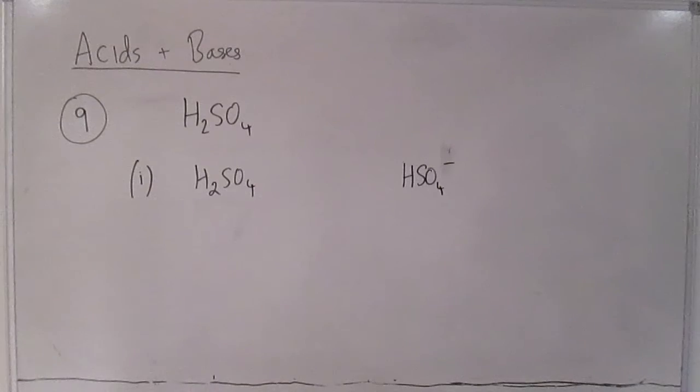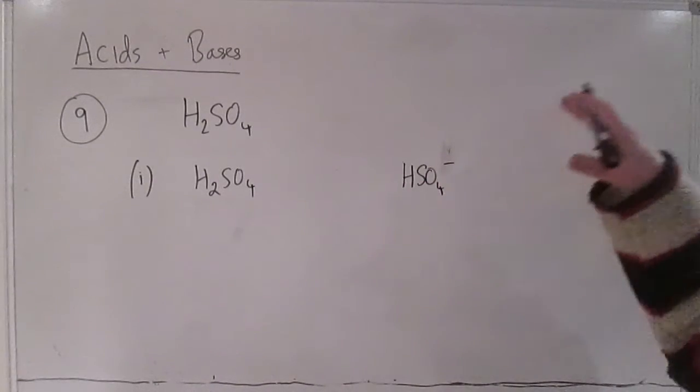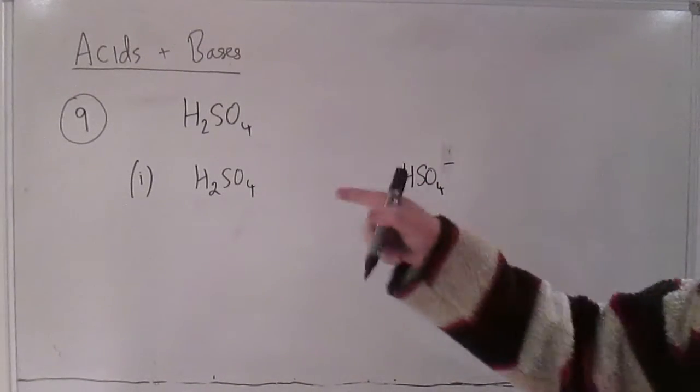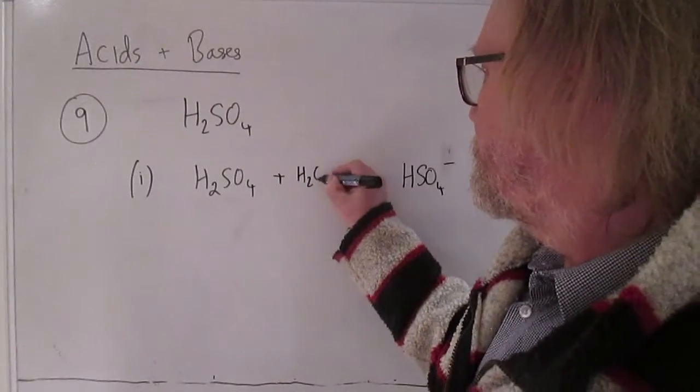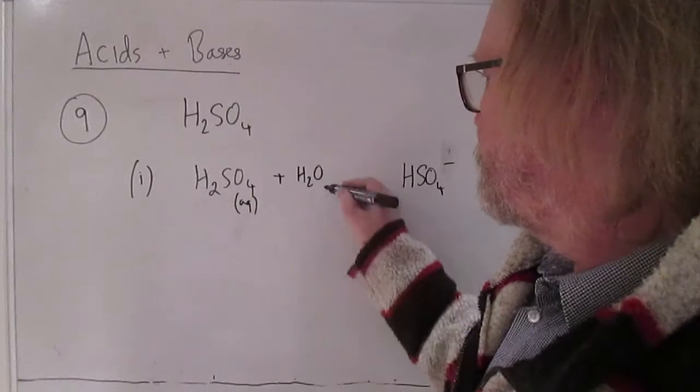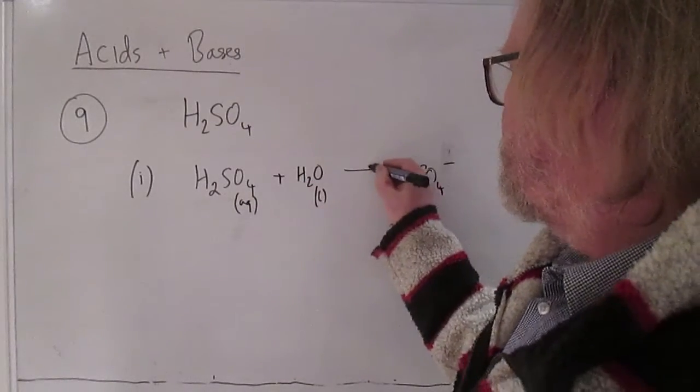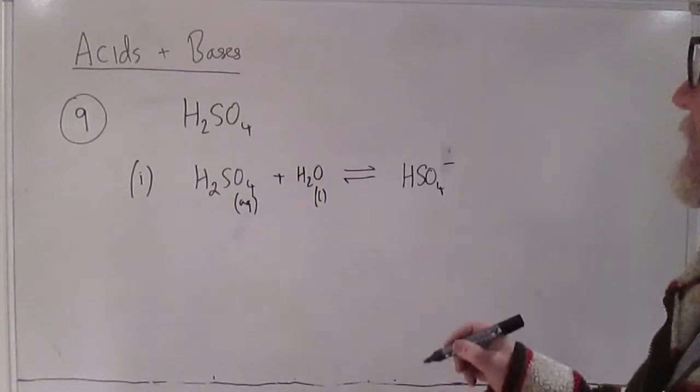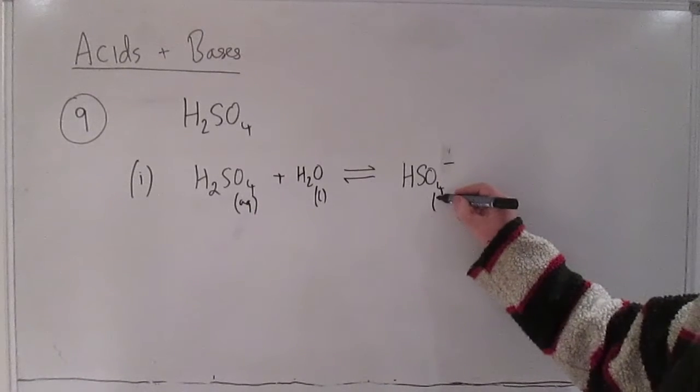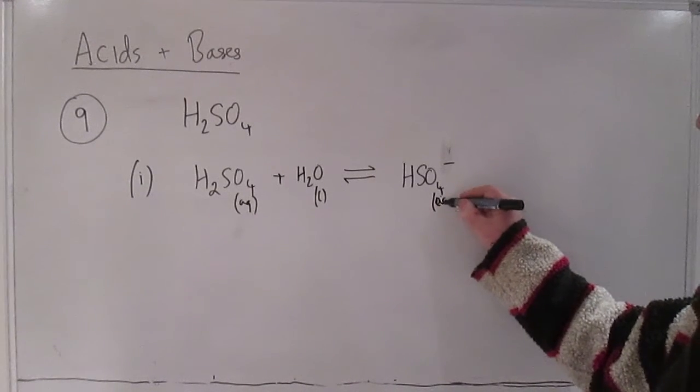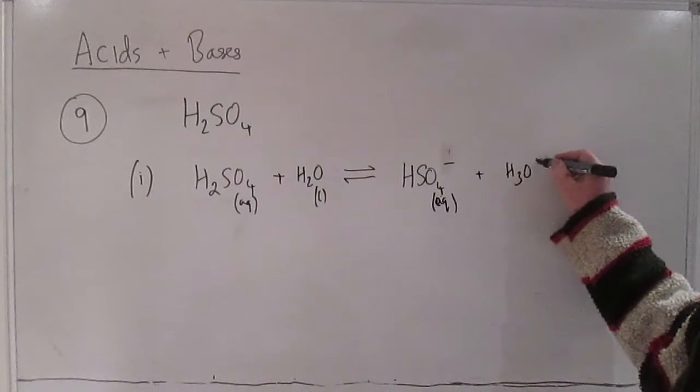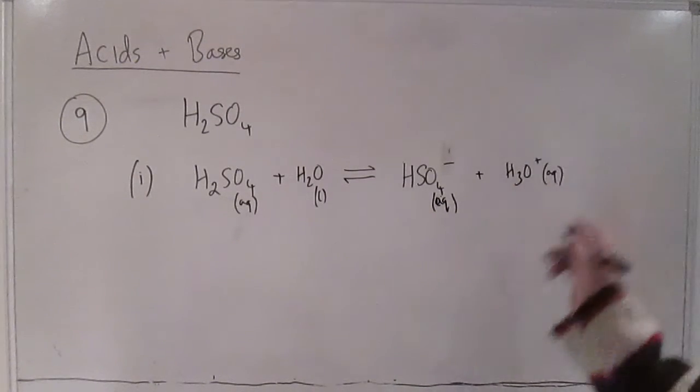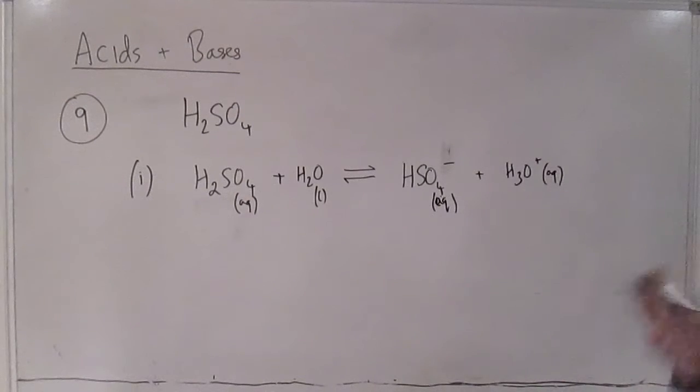So the equation whereby that happens in water is that that's going to react with water. So aqueous sulfuric acid plus liquid water and then you get the usual reversible sign gives you HSO4 minus aqueous plus H3O plus. That's the Bronsted-Lowry version of the equation where you don't simplify it to H plus but you actually show that the water's picked up the proton.